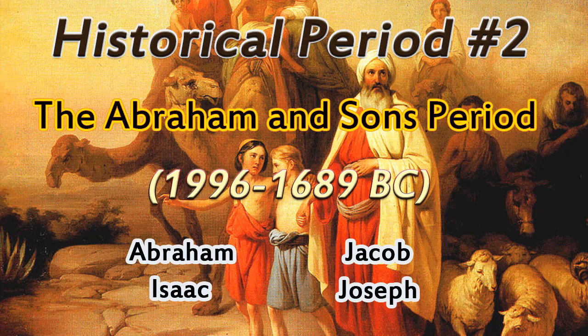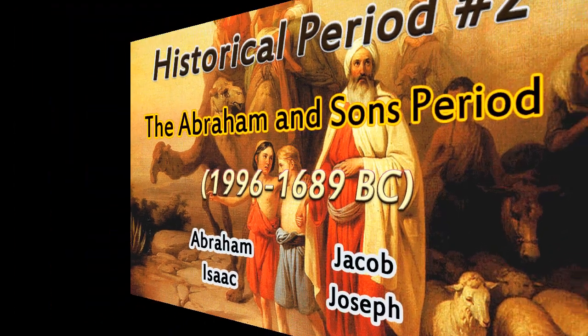And number four, Joseph, who was the favorite son of Jacob. His beloved wife Rachel died giving birth. He was gifted in that he could interpret dreams, and his brothers were jealous of him and sold him into slavery in the land of Egypt. But God was with him, and through these peculiar circumstances, Joseph was able to save the Hebrews from extinction.